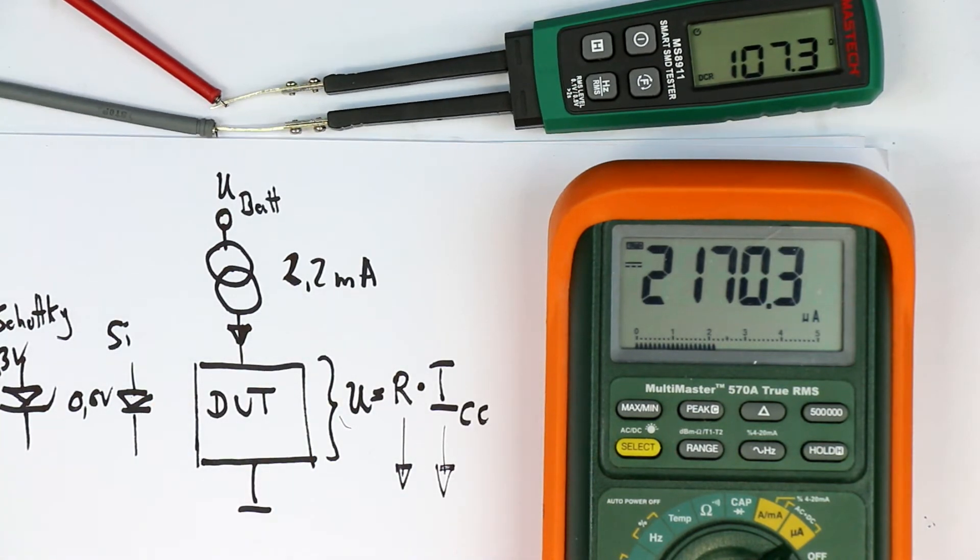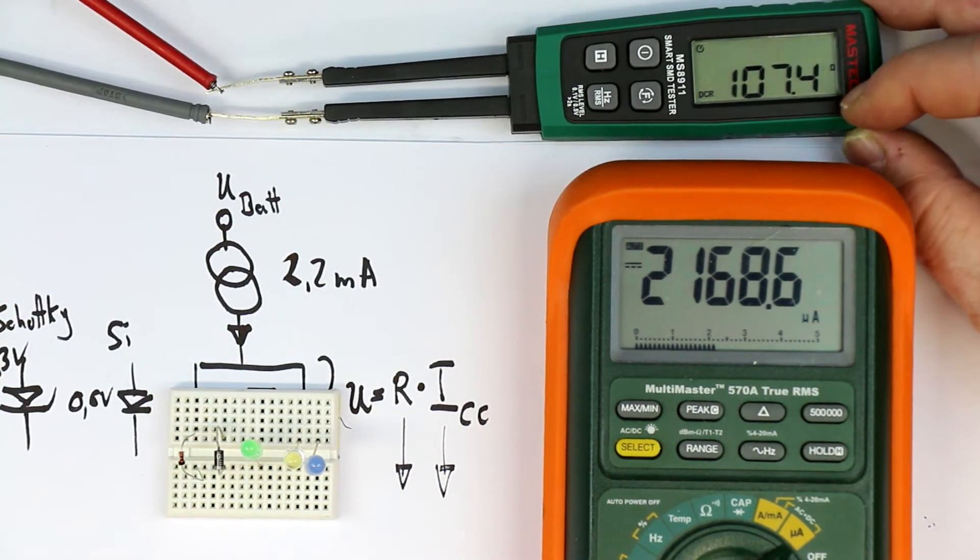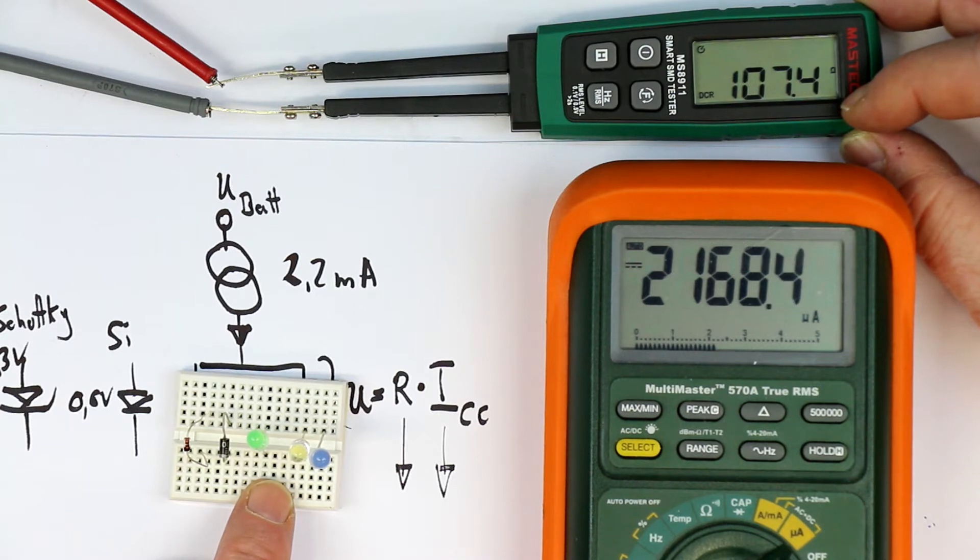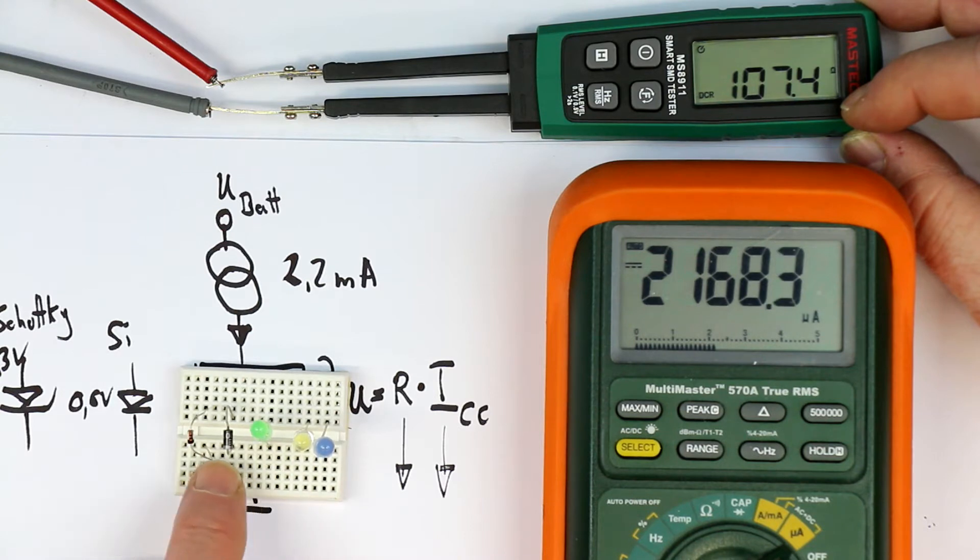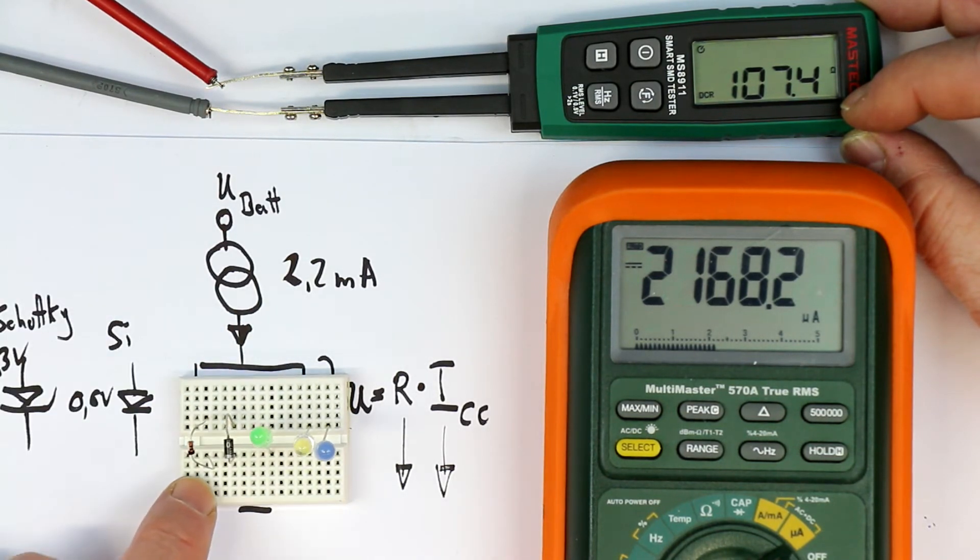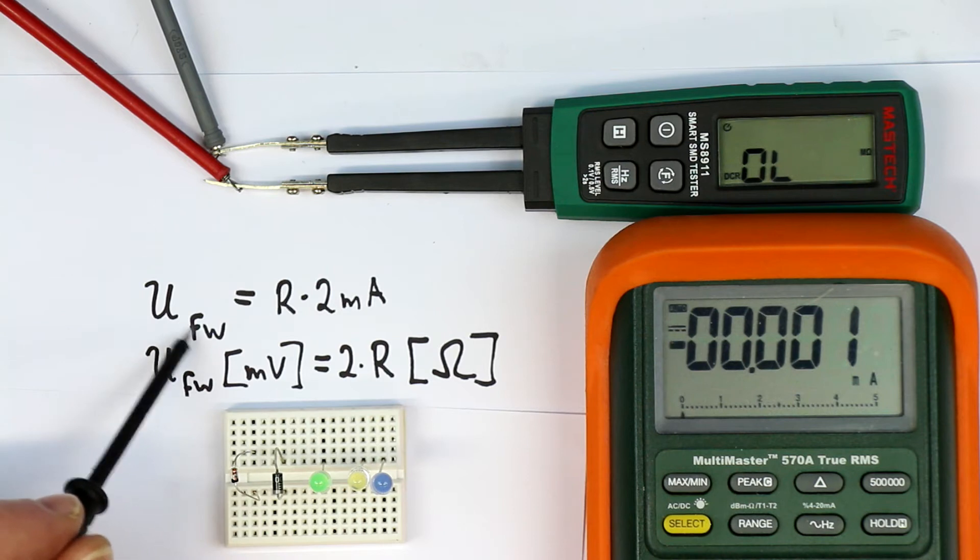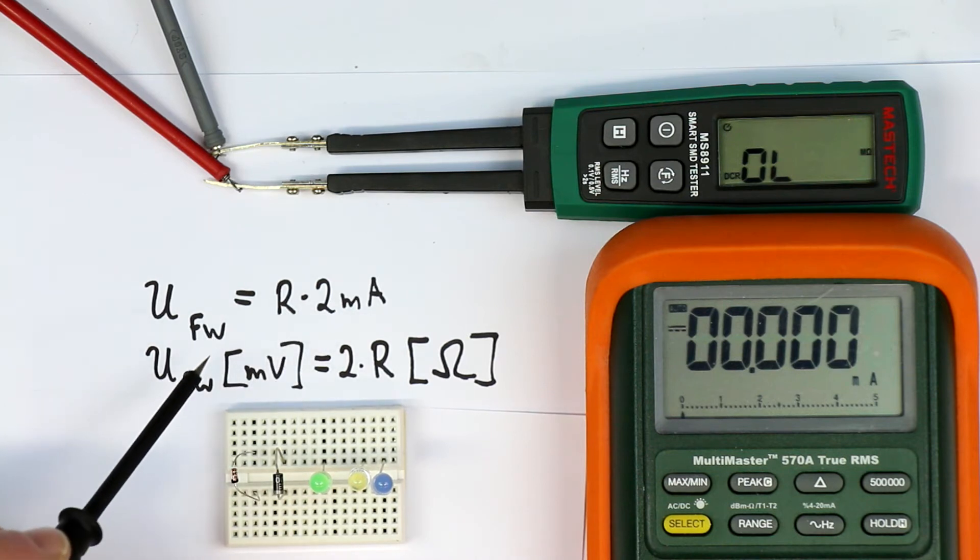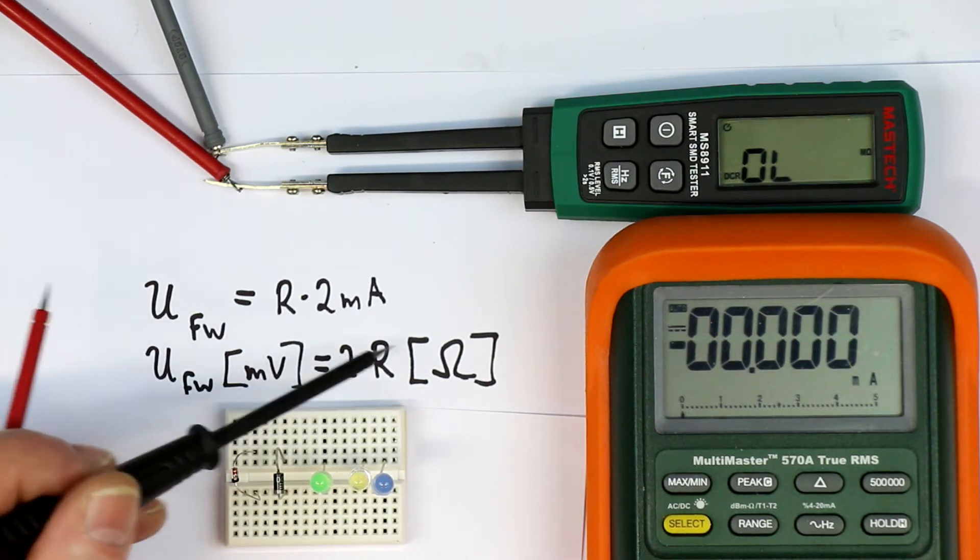And now let's simply try to measure what ohms values do we get displayed with the different types of diodes. And does this give a meaningful display or hint what kind of diode there is inside that we are measuring our unknown device under test and if the diode is working or blown up. So if our assumption is correct, then the forward voltage of our diode under test is simply the displayed resistance times 2 milliamps. Or in other words, the forward voltage in millivolts is 2 times the displayed resistance in ohms.